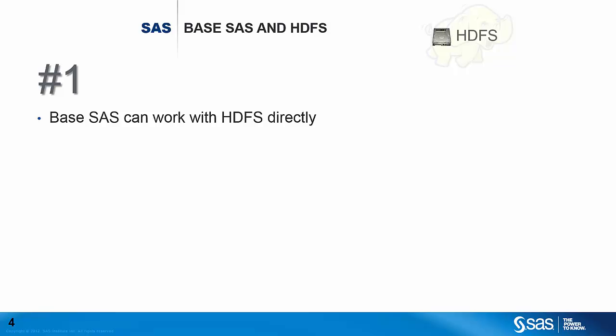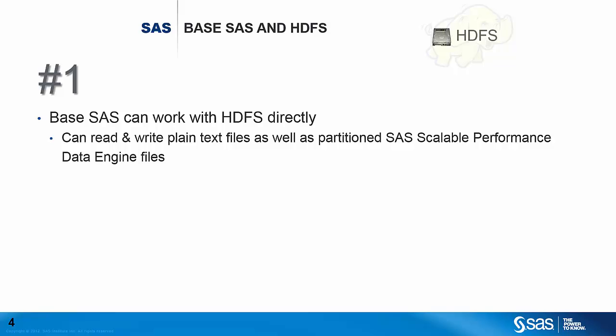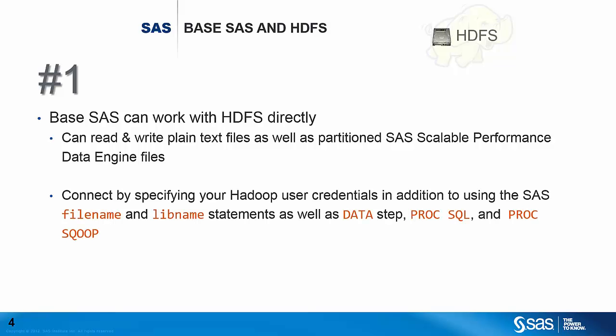The number one way that SAS can get data in Hadoop is that Base SAS can already work with HDFS directly. Base SAS software is where most analytic processing occurs — it's the foundation of any SAS solution, so if you've got SAS at all, you already have Base SAS. Base SAS can read and write plain text files as well as partitioned SAS Scalable Performance Data Engine files. You can connect Base SAS to Hadoop by providing your Hadoop user credentials, using SAS filename and libname statements, as well as the data step and the SQL and SQOOP procedures.